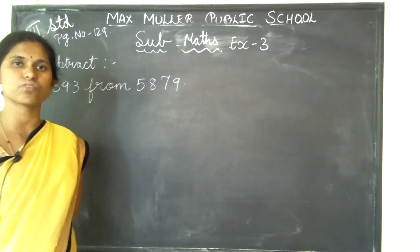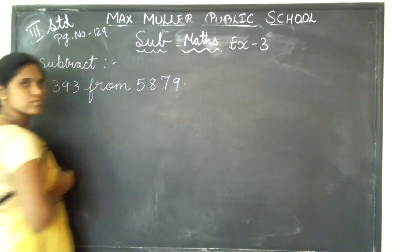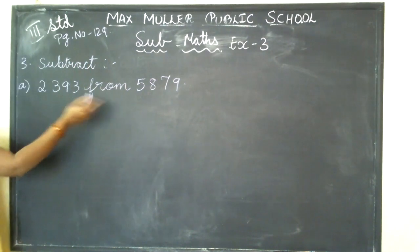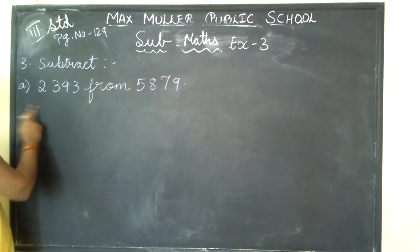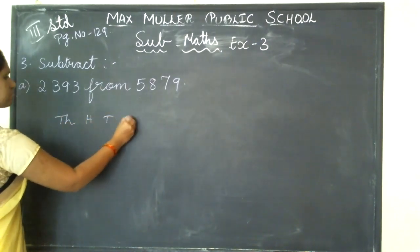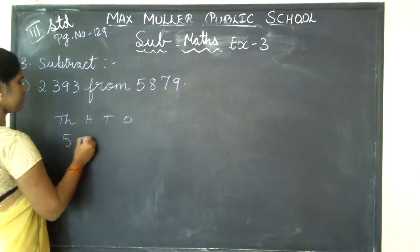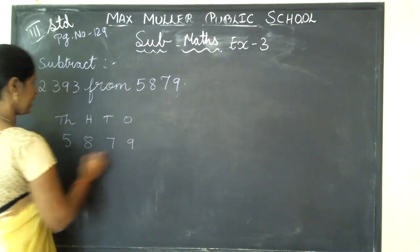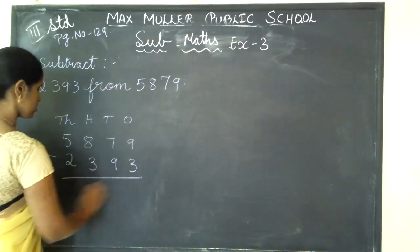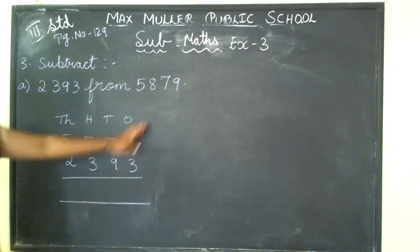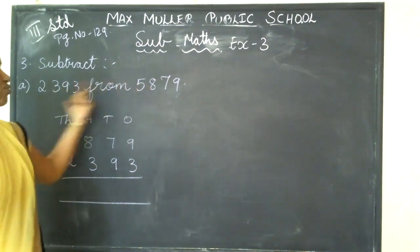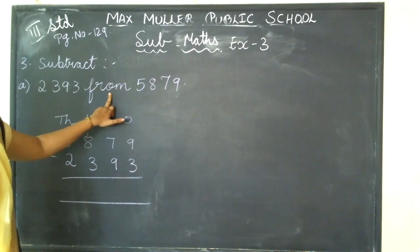Understood, all of you, how to do this? First you have to write the bigger number. Which is the bigger number? 5879 is the bigger number. After writing that, you are writing 2393. Understood? So, write the place values here. We are writing 5879 minus 2393. You have to write the bigger number first, then write the smaller number. In between these two numbers they have used 'from'.